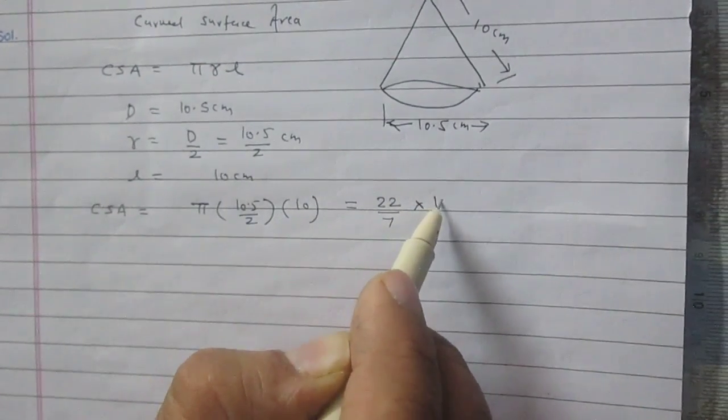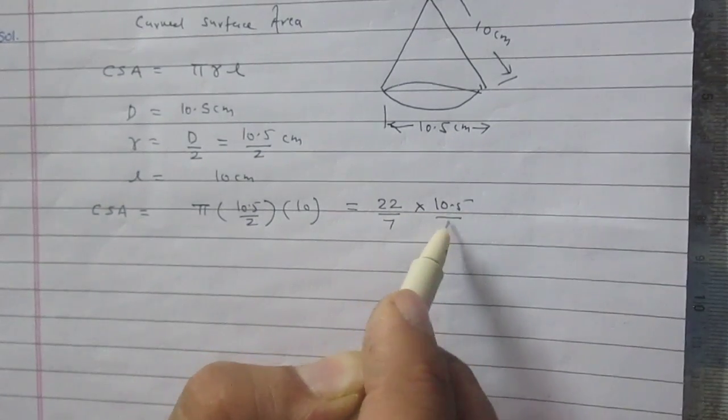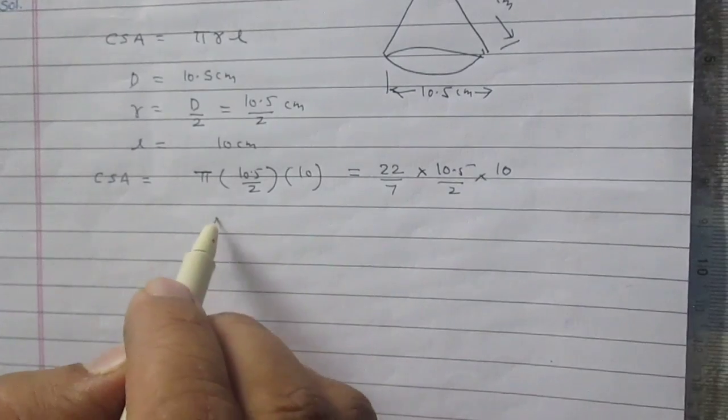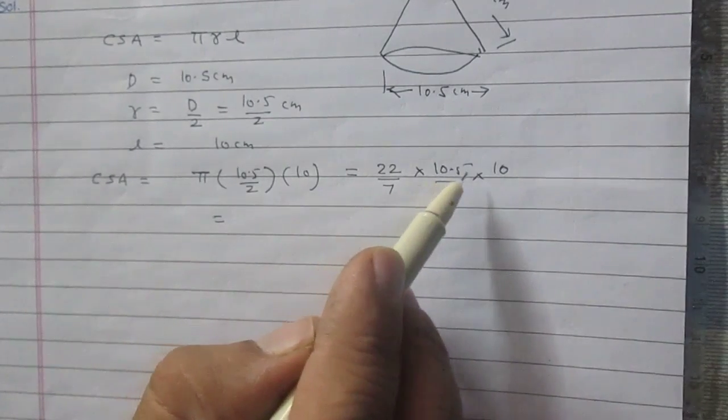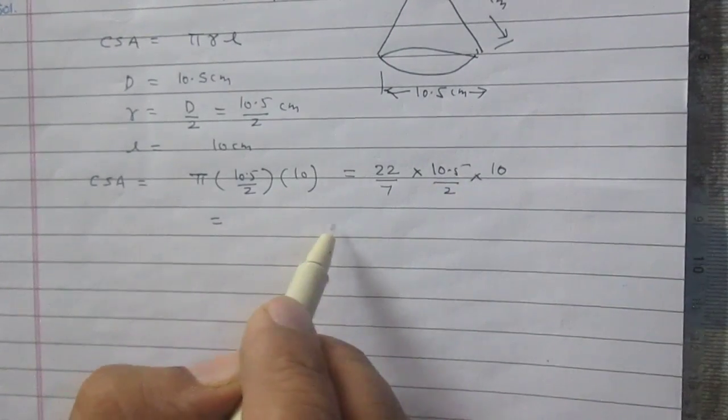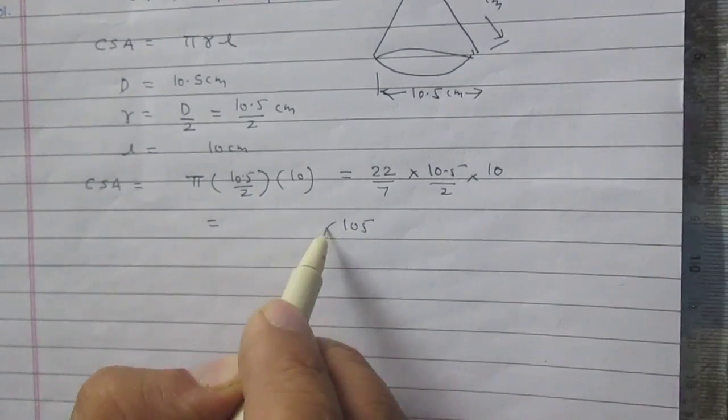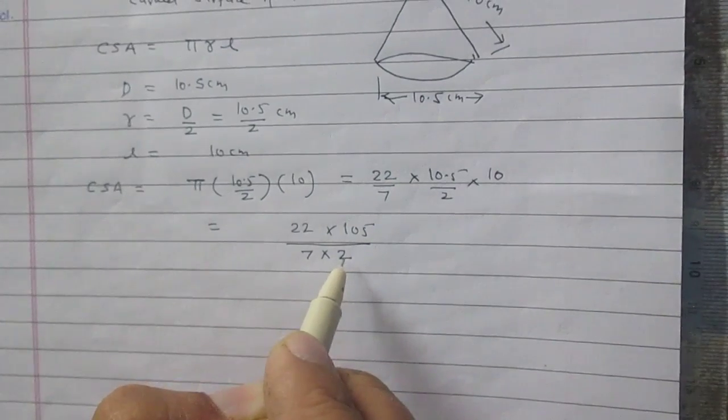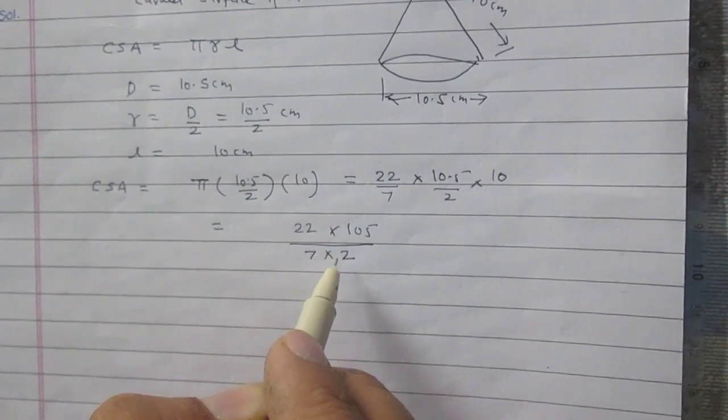So it is 22 by 7, then 10.5 divided by 2 multiplied by 10. 10.5 in multiplication with 10 will become 105, 22 as it is, then 7 and 2 in the denominator.